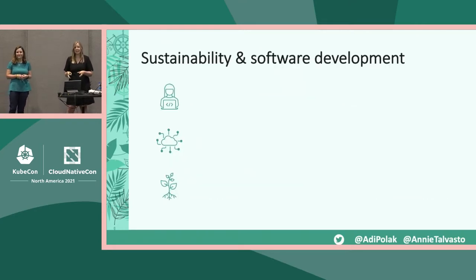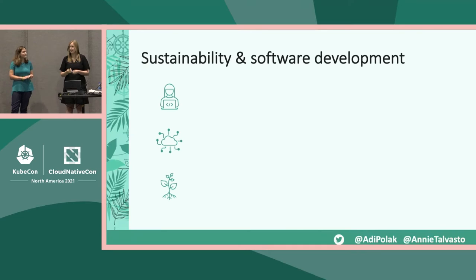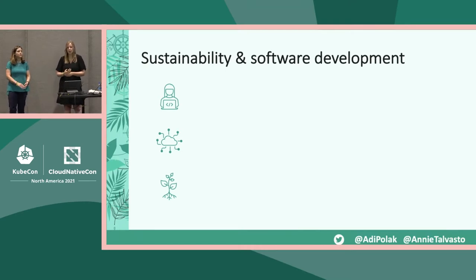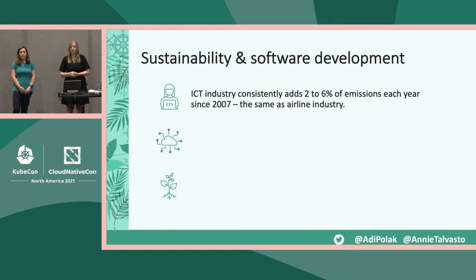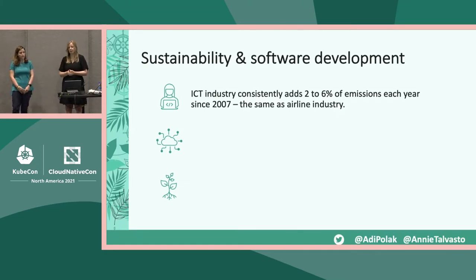To set the scene: when you think about industries causing a lot of emissions and pollution in the world, we don't typically think about the technology industry — we think about, for example, the airline industry. But it's a really interesting fact that the tech industry is either causing the same amount of emissions every year, or even more than the airline industry. So tech and the airline industry are both major players in the emissions-per-year category. We are definitely not innocent in this sense, and it's only going to get worse.